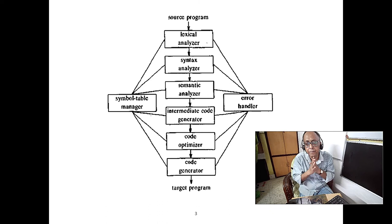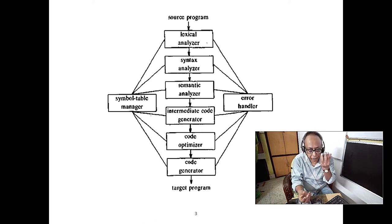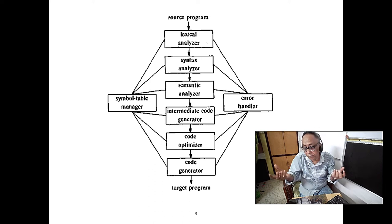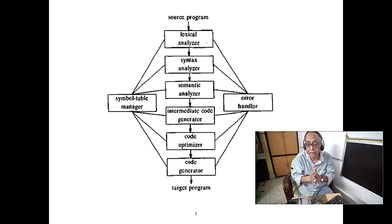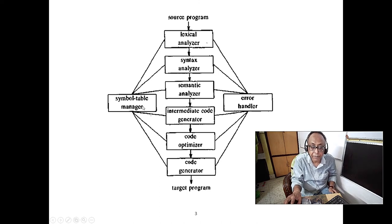In the lexical analyzer, we have a regular expression checker for integers, floating point numbers, real numbers, variable names — checking whether a variable name is legal or not. If there is a keyword like 'if', 'then', 'else', you cannot use them as variable names. Opening and closing braces are also keywords. Your program consists of reserved words and tokens, all saved in a symbol table manager.